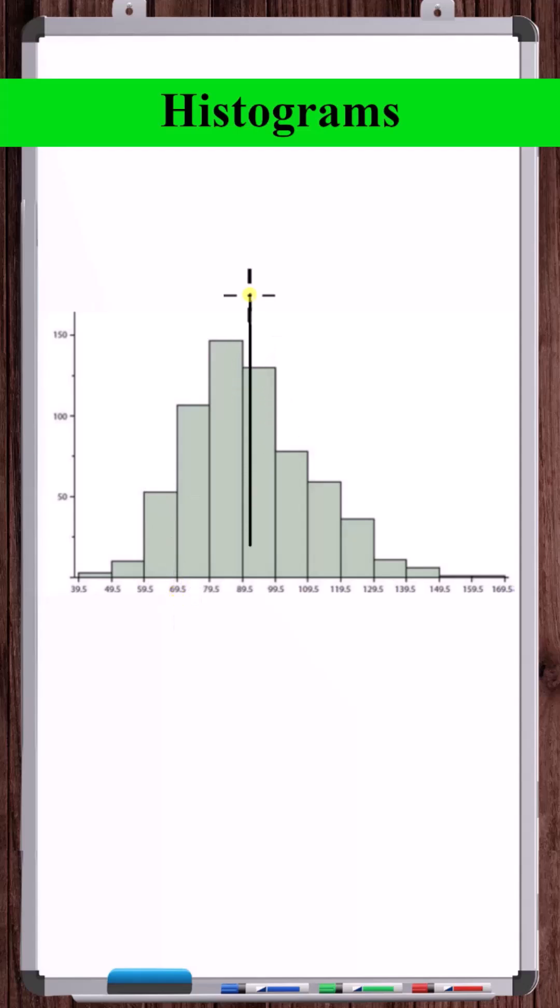then the median is the point on the horizontal axis where 50% of the area of the histogram is to the left and 50% to the right. The average, on the other hand, is the balance point of the histogram.